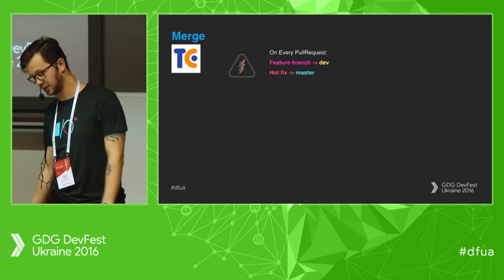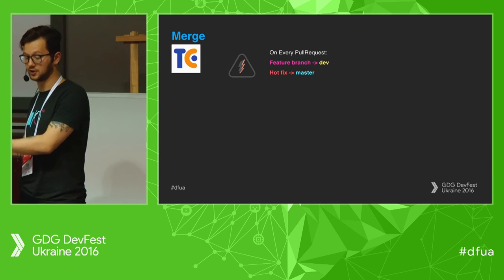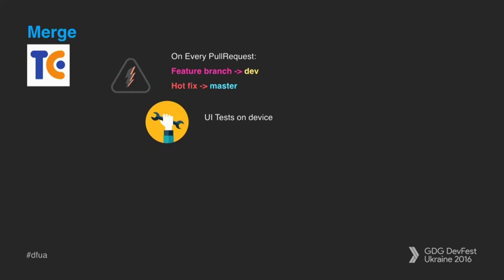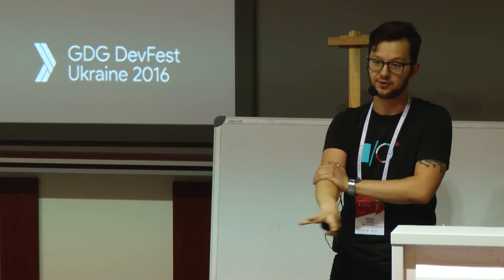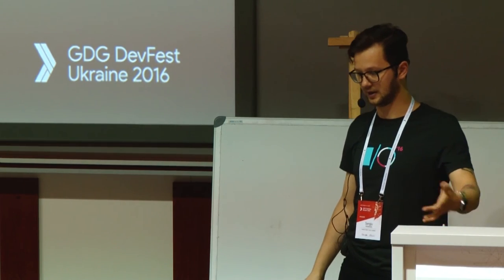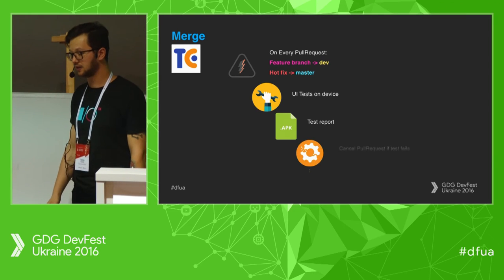Second: merge job. It's triggered every time there's a pull request from a feature branch to dev, or from a hotfix to master. It runs all UI tests with Spoon on all connected devices and sends the test report. It's good to have separate UI test sets — for merging a feature you might run a 40-45 minute set, while the full two-hour run only happens during the nightly build. If tests break, the pull request is cancelled.